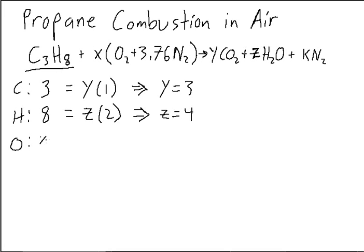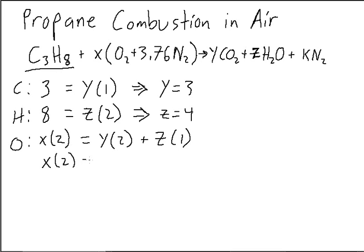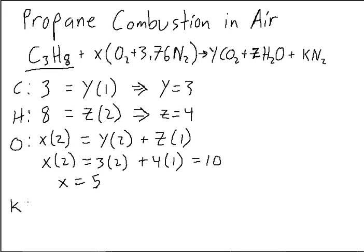So we know we have X times 2 is equal to Y times 2 plus Z times 1, and so we have X times 2 is equal to 3 times 2 plus 4 times 1, which equals 10, so we know X is equal to 5.